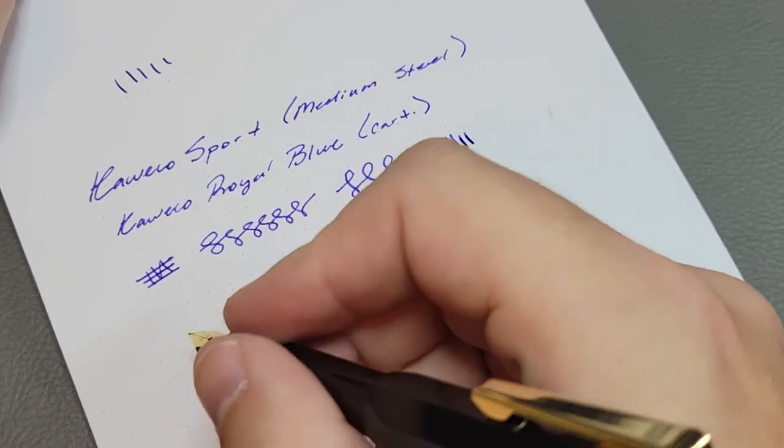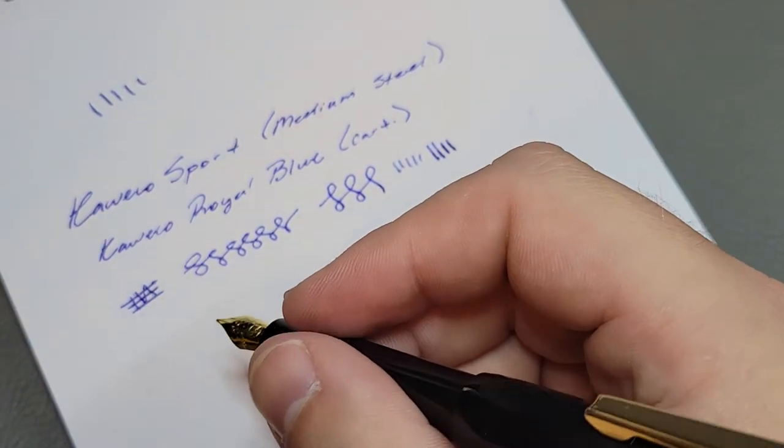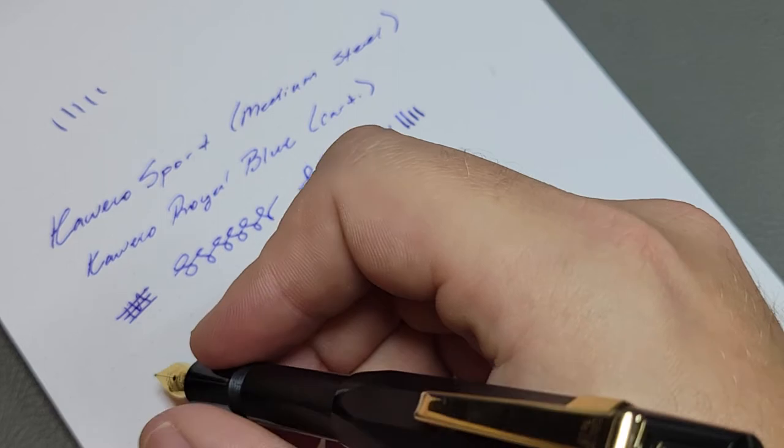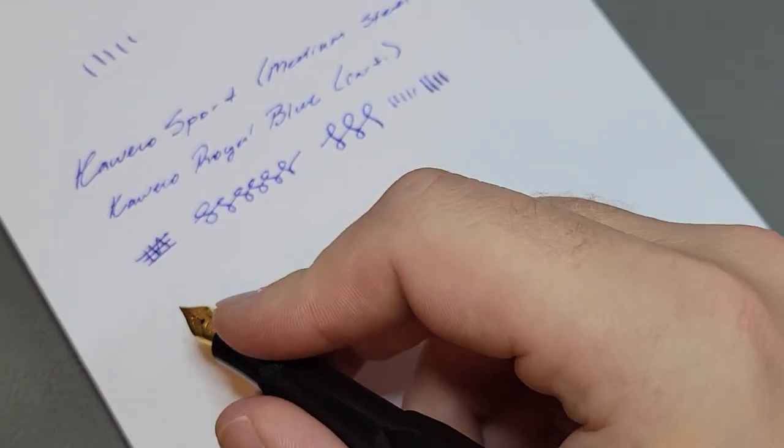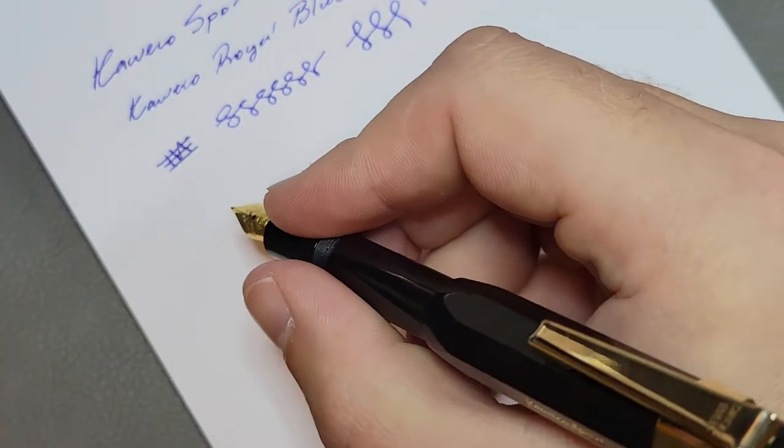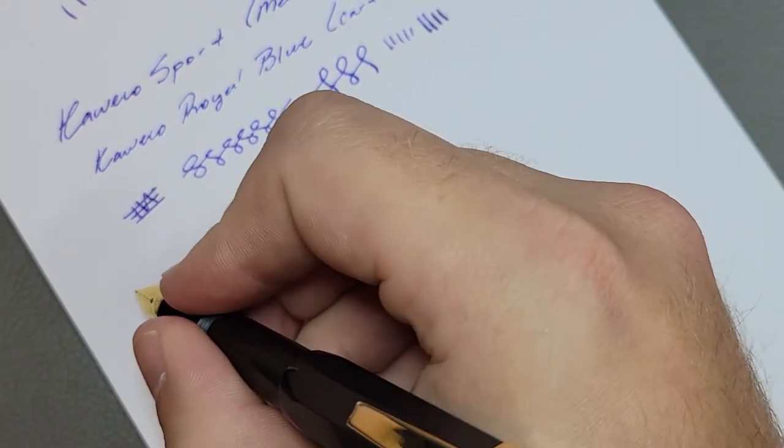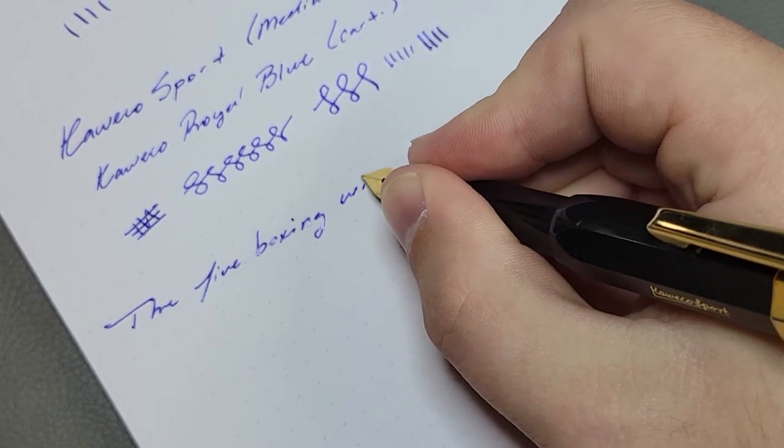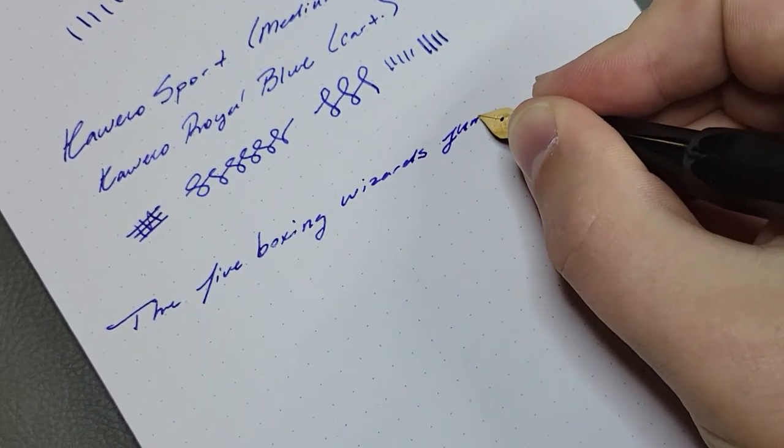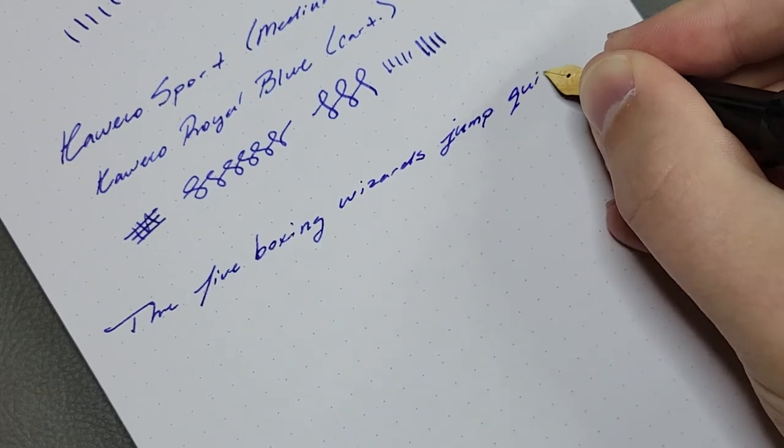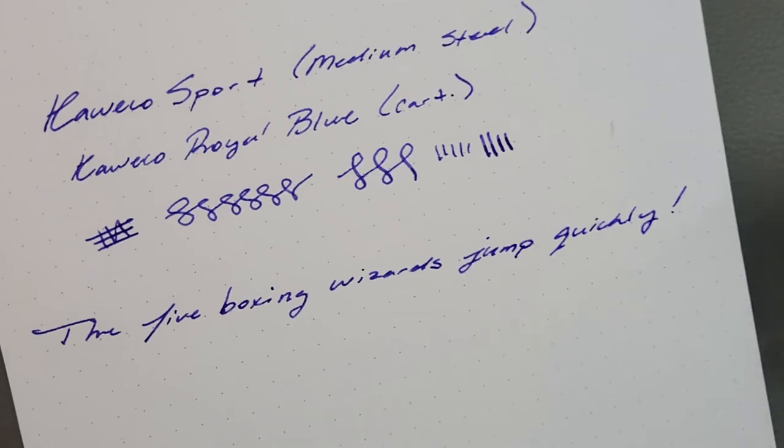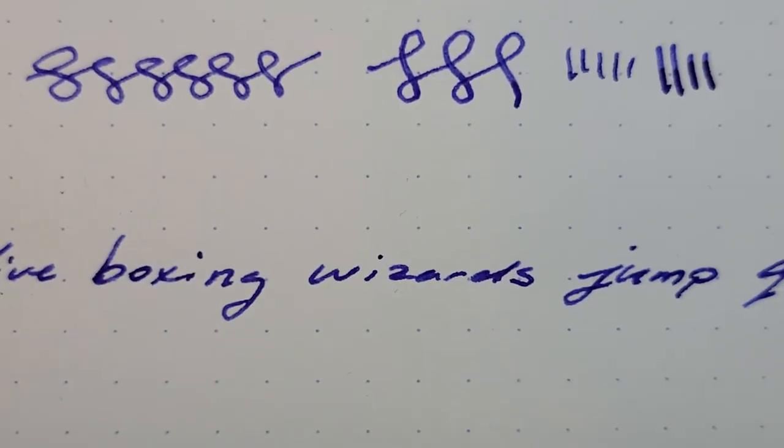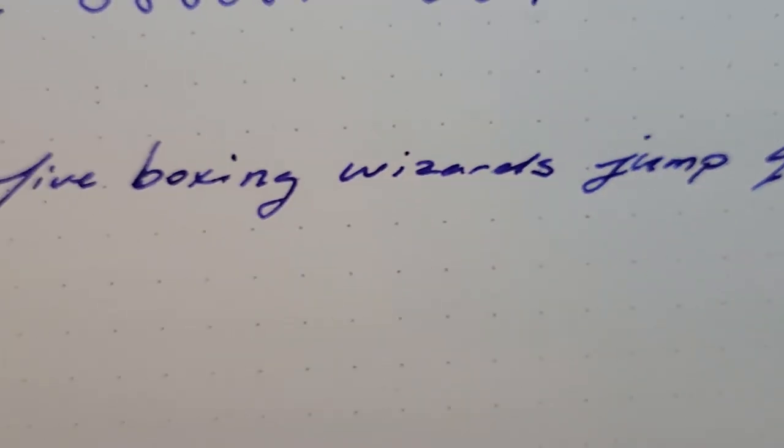People tend to enjoy pangrams when they're seeing an ink review, just to see it write for the first time. I'm not going to use the standard fox one, I much prefer the five boxing wizards. The five boxing wizards jump quickly. There we go. As you can see this ink does have some shading if it goes on wet, just a standard blue ink. No sheen or anything to think of but very smooth pen.